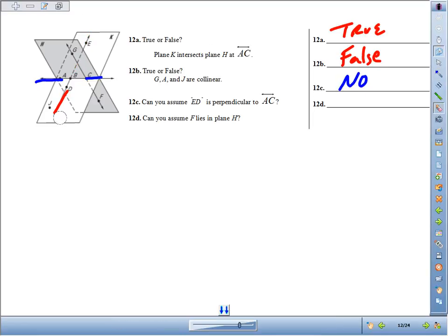We cannot assume that. Can we assume that F lies in plane H? We've got F with a dot, that point is written on the plane, so yes, we can assume that.